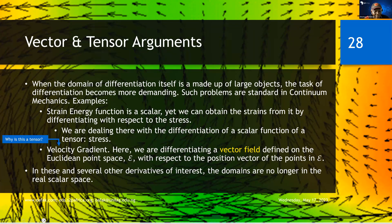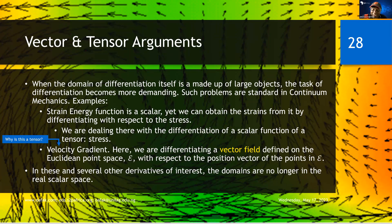In this and several other derivatives of interest, the domains are no longer in the real scalar space. The domain here — the space in which you live — it is a Euclidean point space, and at every point a vector is defined: the position vector. So you are living in a vector space. There is a difference when you are differentiating with respect to time, which is a scalar, versus differentiating with respect to position vector in three-dimensional space, where you are differentiating with respect to a vector. The answer you will get is going to be a tensor.